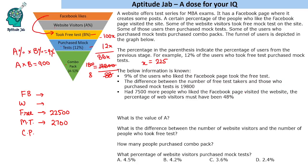We are given that if 7,500 more people who liked the Facebook page had visited the website, the percentage of web visitors would have been 48 percent. Since 9 percent of Facebook page likers took the free test and free test takers number 22,500, the total Facebook page likers equals 22,500 divided by 9 percent, which is 2,50,000.